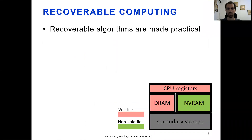New non-volatile RAM technologies, or in short NVRAM, introduced byte-addressable memory with DRAM-like performance which is also non-volatile. NVRAM is expected to replace, in the near future, some or even all of main memory.